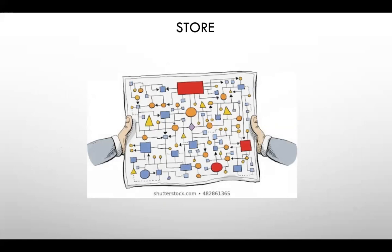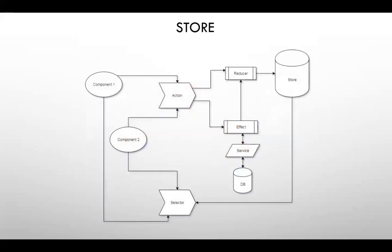Here is the graph of the NgRx store — other stores are similar. First, we have the store, which is the single source of truth where all information is stored, but components can't connect directly. If a component needs to modify something, it needs to dispatch an action. That action can trigger a reducer, which generates a completely new state and replaces the old one.